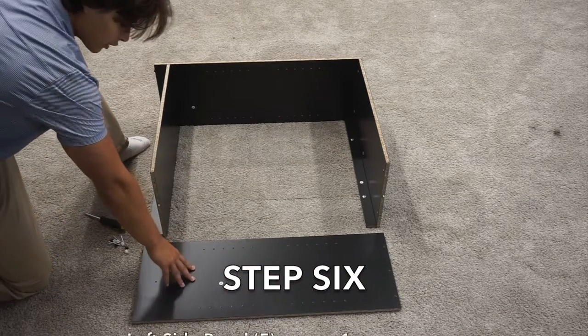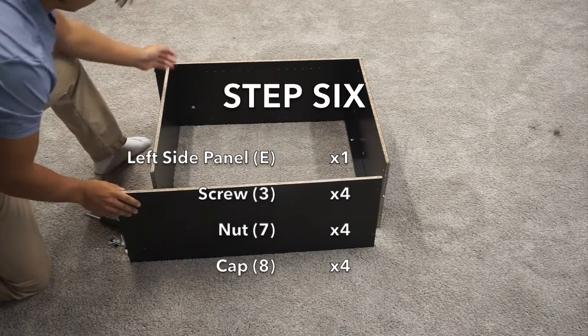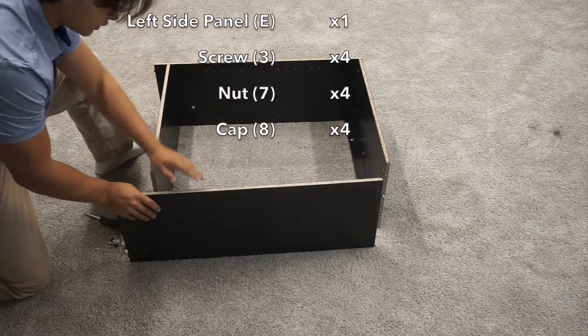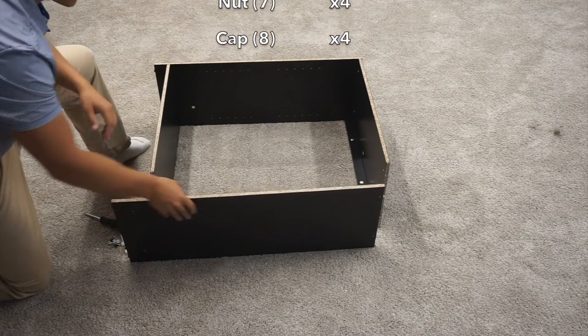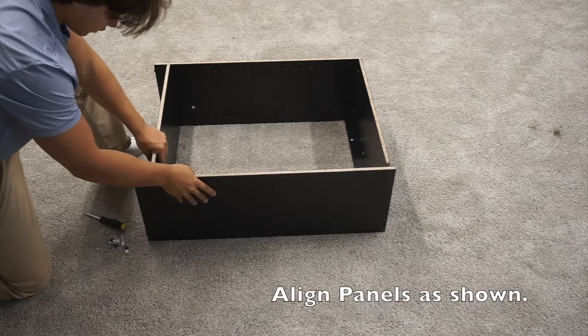For step six, you will want to grab your E panel. You will want to align it so that the feet are on the same side as this, the holes are on the inside, and the unfinished side is facing up. You can then slide it on to the rest of the assembly.